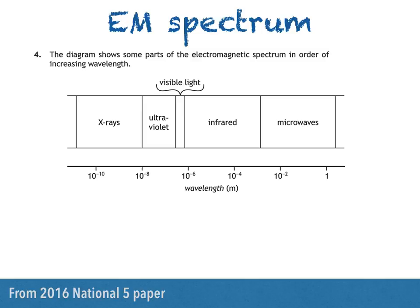Here's a question from the 2016 National 5 paper. The diagram shows some parts of the electromagnetic spectrum in order of increasing wavelength.